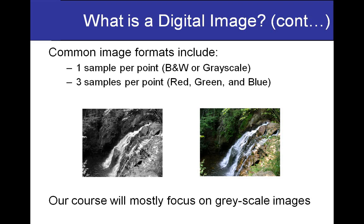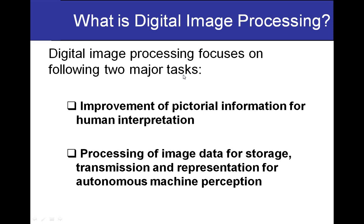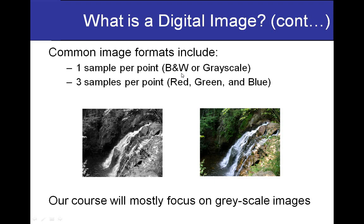Picture elements or pixels must have some value. For very simple images like black and white images, also called binary images, the pixel has only two states: 1 or 0. The 1 means white and 0 means black. So the pixel needs one sample that can be 0 or 1 to show whether at that particular point the state of light is dark or illuminated.